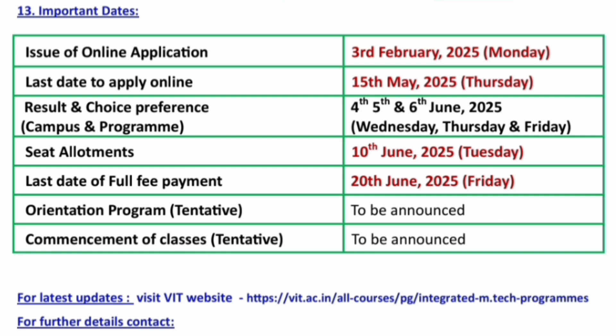Campus selection and program selection can be submitted on 4th, 5th, and 6th June. Seat allotment will happen on 10th June, Tuesday, within 4 days of choice filling. The last day for full fee payment — the complete course fee — will be 20th June. After that, in July there will be an orientation program for joining students, and commencement of classes will start around 15th July.